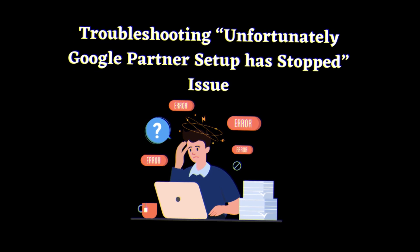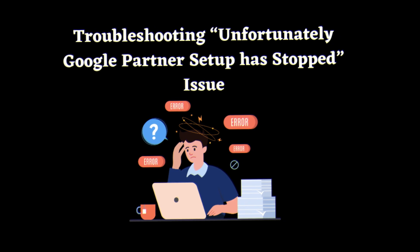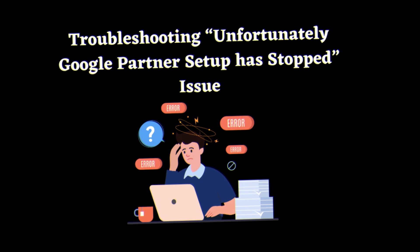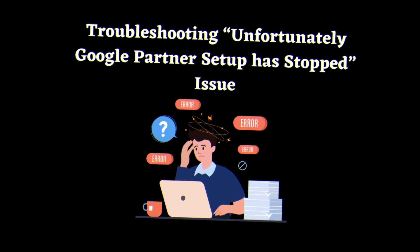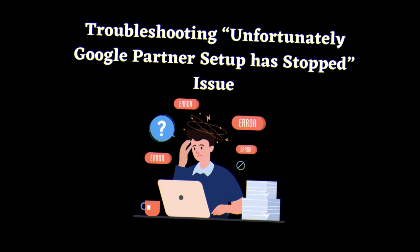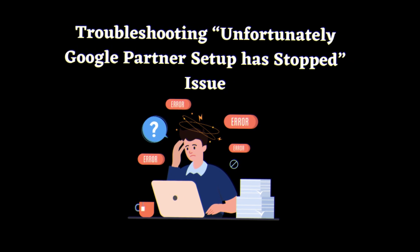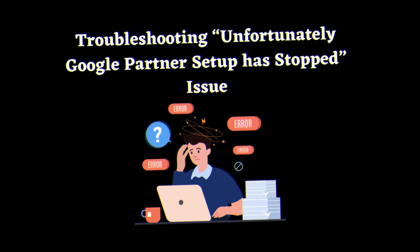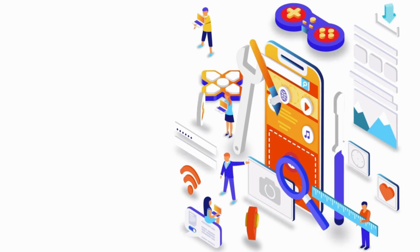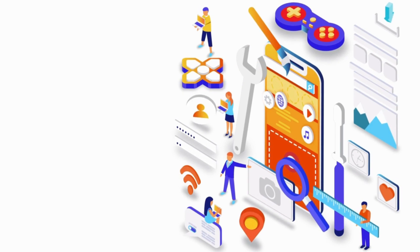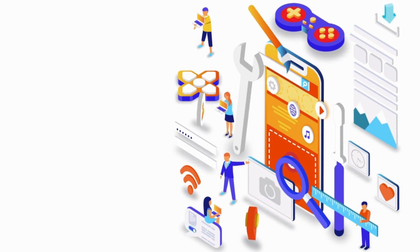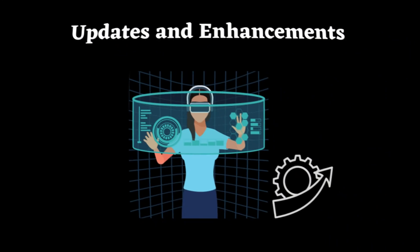Tech troubles are a part of the game, and we've all been there. One common hiccup users face is the "Unfortunately, Google Partner Setup has stopped" error. But fear not, we've got your back. In most cases, this can be resolved by clearing the app cache or restarting your device. If the problem persists, you might need to uninstall and reinstall the app.